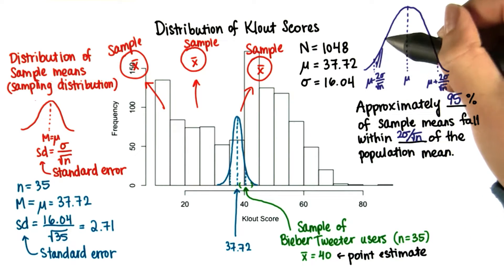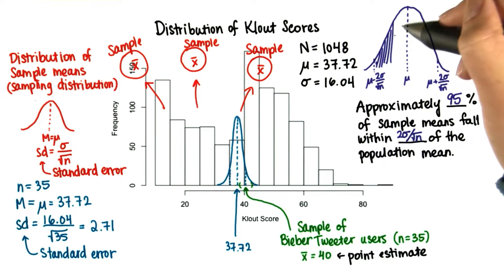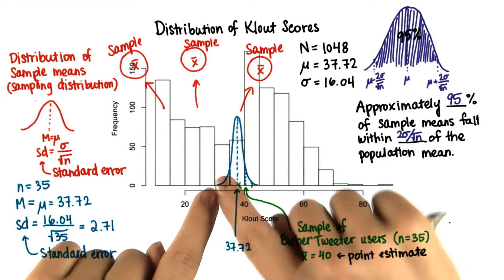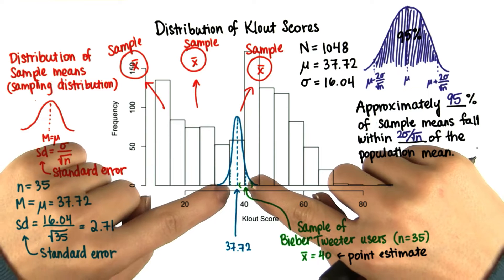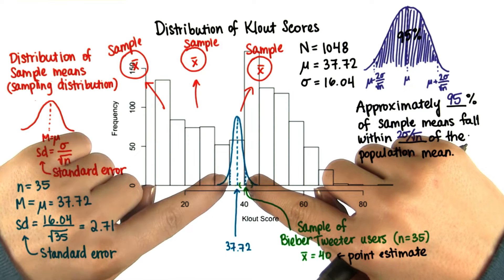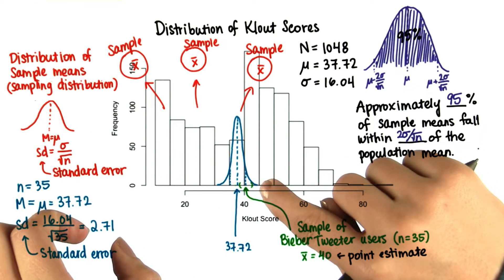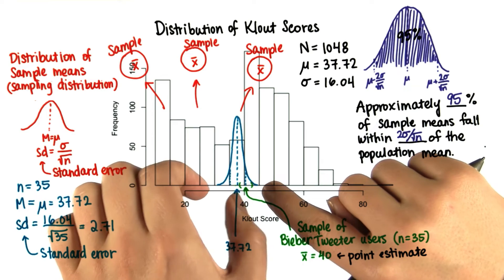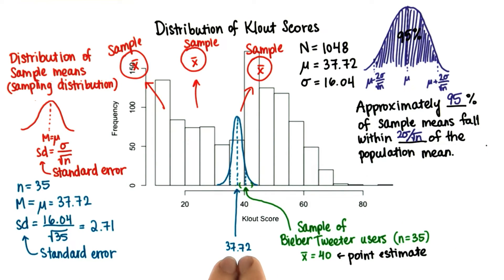Now 95% are between these two values. So getting back to this example, 95% of means are within two of these standard deviations on either side of the population mean.